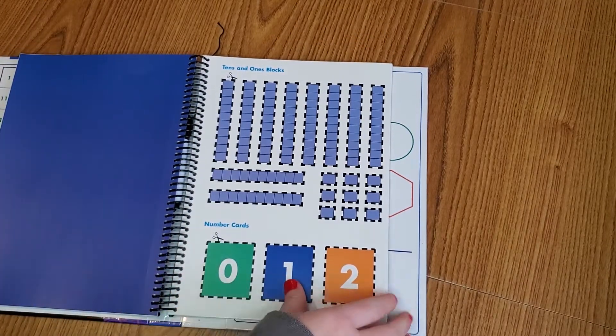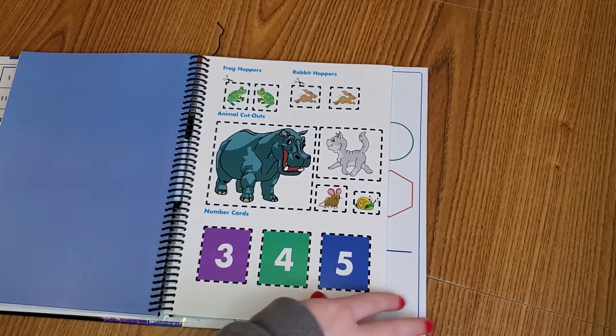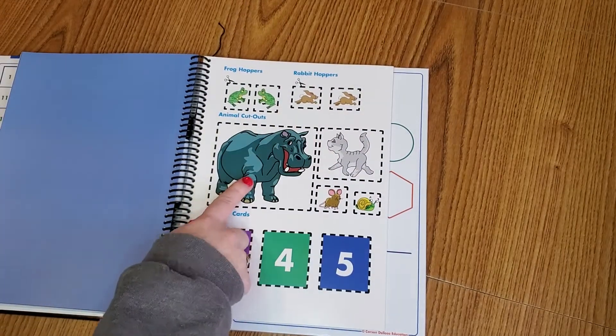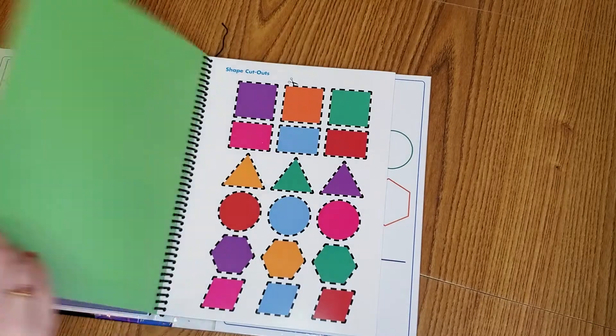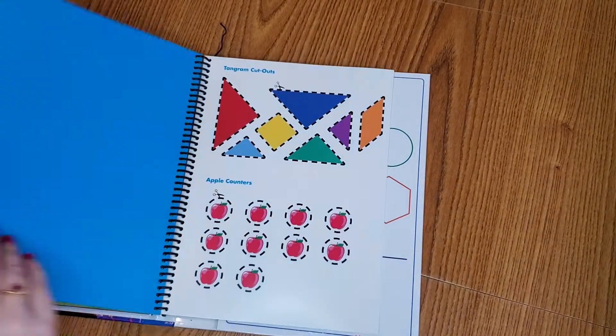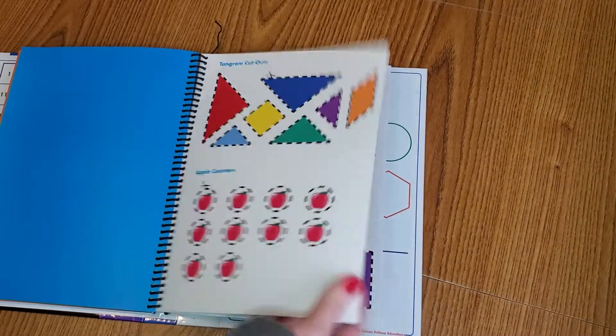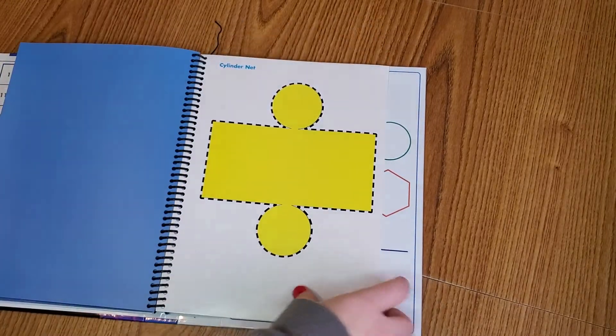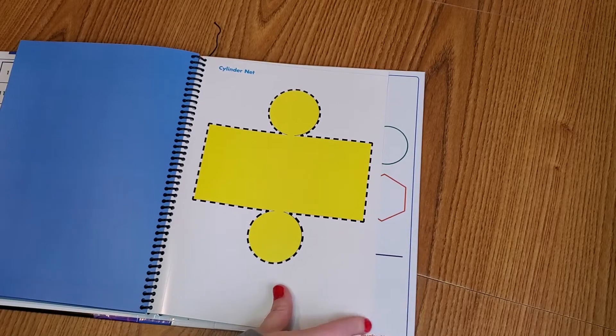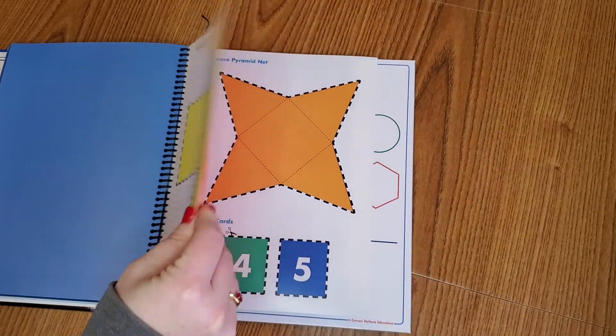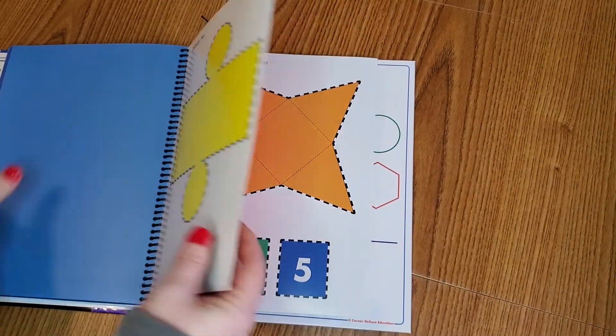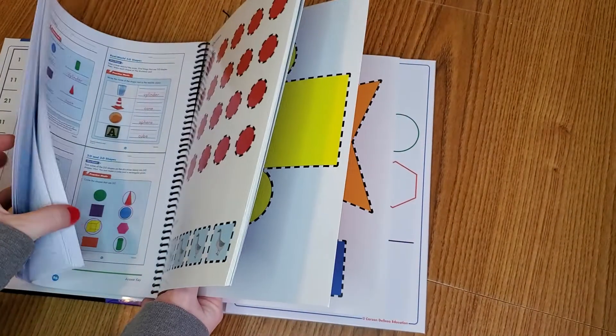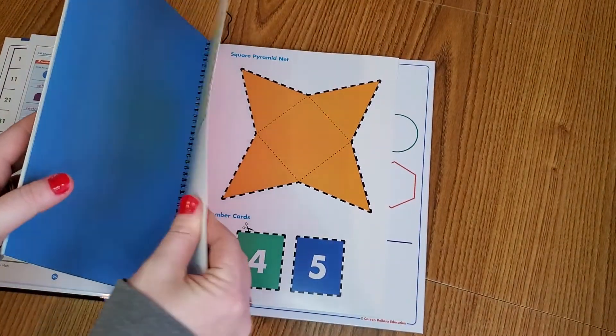Tens and ones, number cards, frog hoppers, rabbit hoppers, animal cutouts, shapes, tangrams, apple counters, a cone, more number cards, cube, cylinder. And these are like really thick cardstock paper. It's not like the regular paper in the front of the book that's paper thin. It's nice good cardstock.